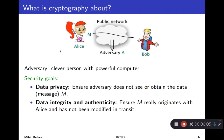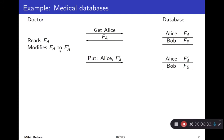Integrity or authenticity ensures that when Bob gets a message that purports to come from Alice, then it really does. He's assured that Alice sent it, not someone else, and that what Alice sent wasn't modified along the way. Cryptography nowadays has many other goals, but these two remain basic and in fact account for a large fraction of the usage and applications. We'll spend a lot of time on those two goals.